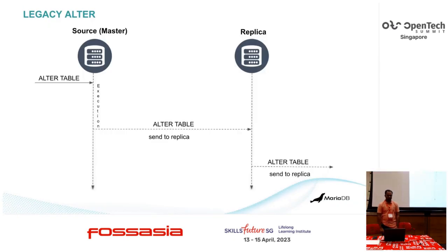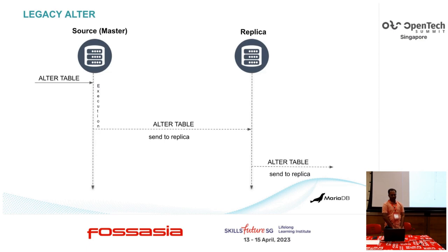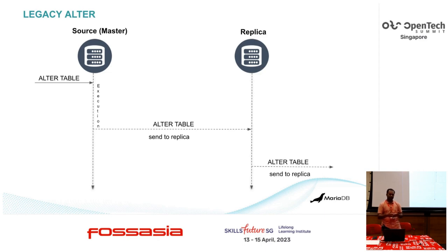In the legacy alter, how alters are handled currently: whenever we execute an alter on a master or source, it will be executed fully on the master first. Once execution completes, only then will it be written to the bin logs, flowed to relay logs, and applied on the slave through the slave SQL thread.